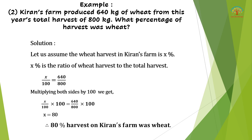x% means x/100. So x/100 = 640/800 (wheat produced over total harvest). Multiplying both sides by 100: x = (640 × 100)/800. Cross-cancelling, x = 640/8 = 80. Therefore, 80% of the harvest on Kiran's farm was wheat.